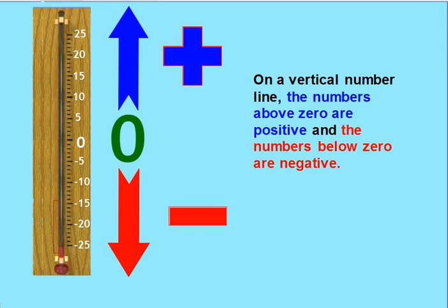You can also show integers on a vertical number line. If I told you that it was 20 degrees outside, that would be a positive 20. If I said it's going to be very cold when we snow ski, it will be negative 10 or 10 degrees below 0 — that would be a negative 10. The positive numbers are above 0, and the negative numbers are below 0.